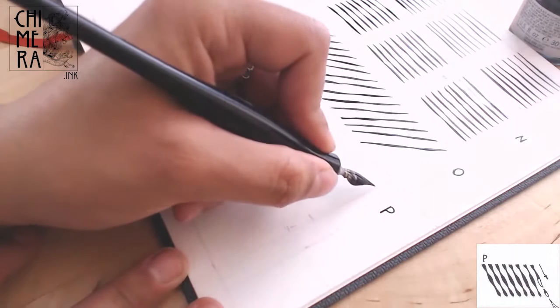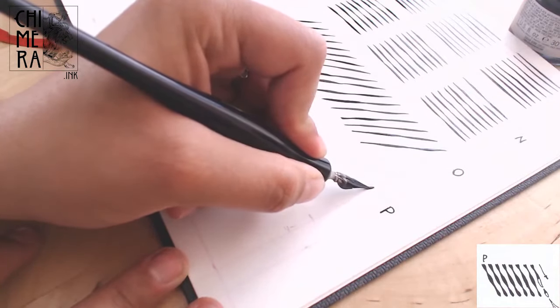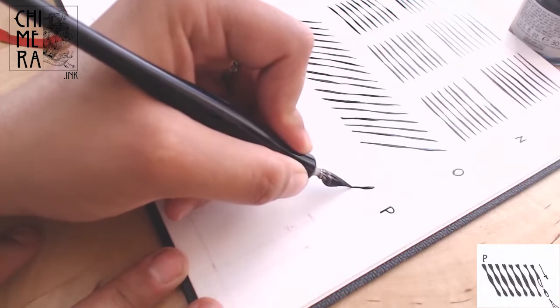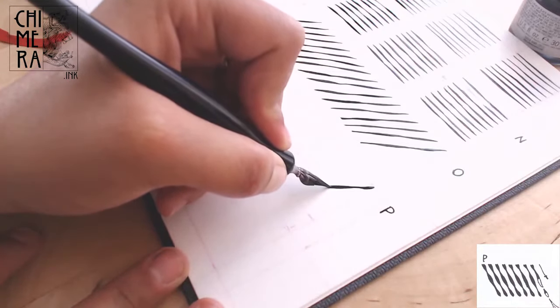P adds another variation to O. And by then, it's much easier to control rhythm and pressure. I think your hand just gets used to it.